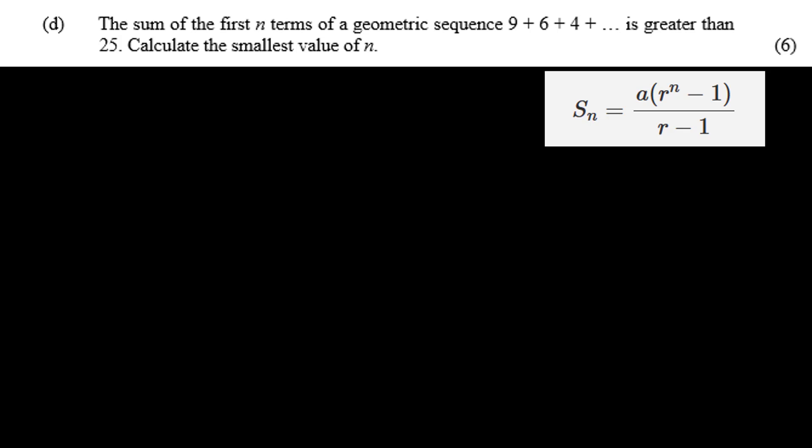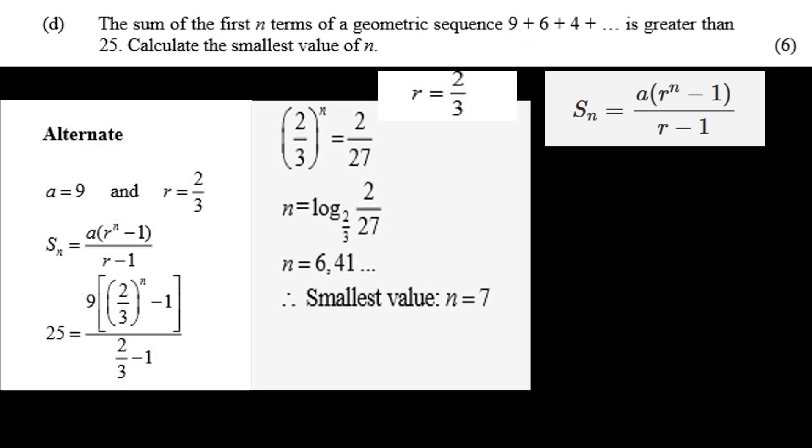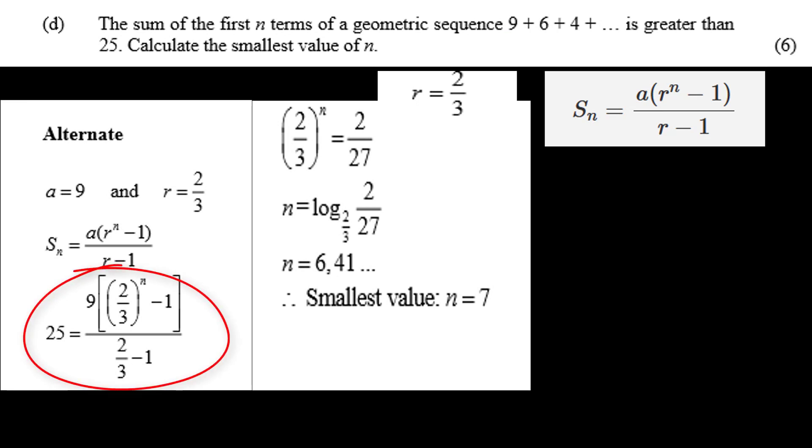Now we know that A equals 9 from the first term, and we've already got R equals 2 over 3. Now put this equal to 25 and solve for N. Simplify this to 2 over 3 to the N equals 2 over 27.